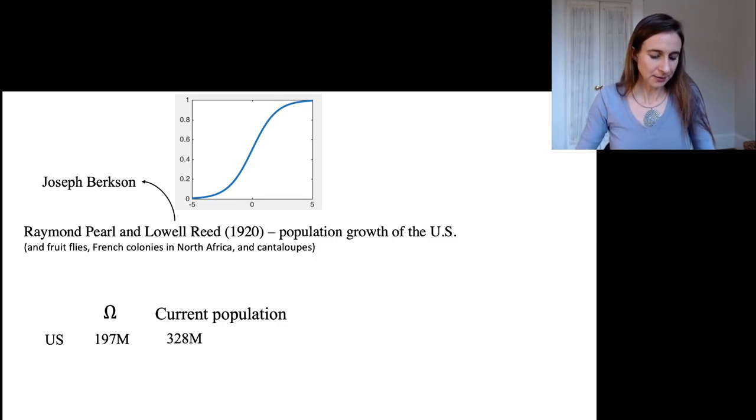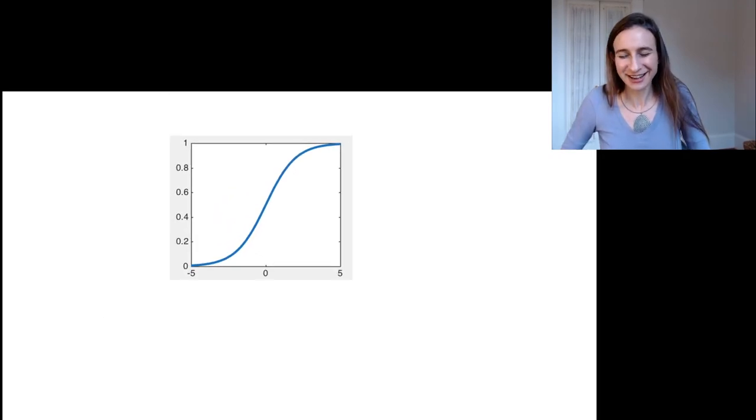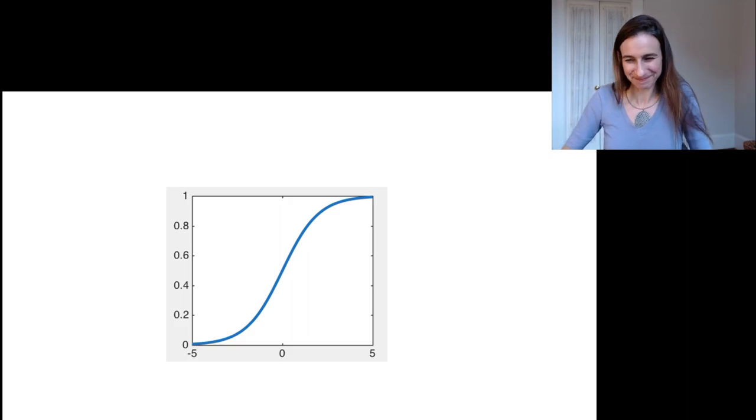The person who pushed for the logistic function to be used instead of the CDF of the normal was Joseph Berkson, born in 1899, died in 1982, chief statistician of the Mayo Clinic. The problem was he had this personality that made people want to do the opposite of what he suggested. He was pushing for the logistic function but also attacking the method of maximum likelihood and so many things that people didn't want to do it. A lot of controversy ensued. It took until the 1960s to resolve it. Now that it's resolved, we can happily use our logistic function. That's the history of it.